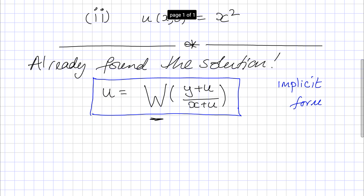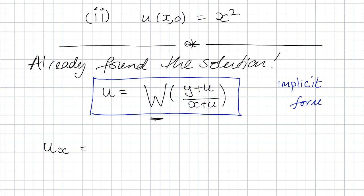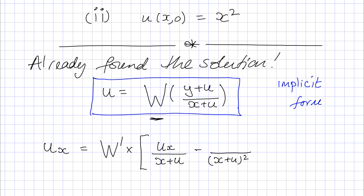The first thing we need to do is construct the derivatives. So we have du/dx, and this works by the chain rule. We take the derivative of the function w and then differentiate its argument. This is a quotient rule: derivative of the top times the bottom, then minus the bottom's derivative times the top, all over (x + u)². The derivative of the bottom with respect to x is 1 + du/dx.